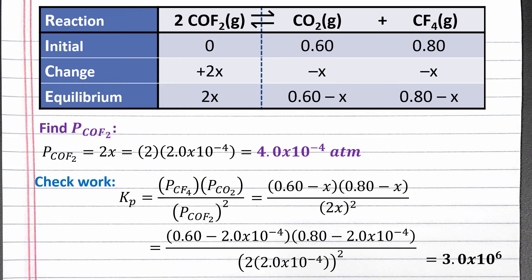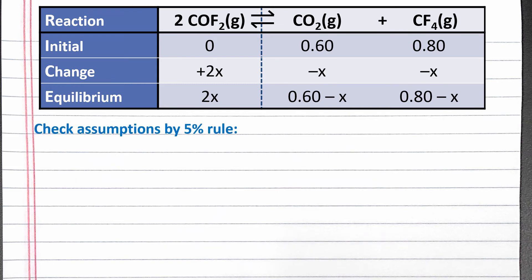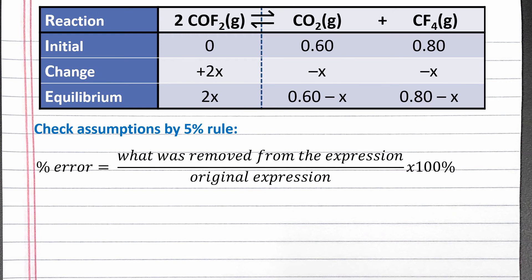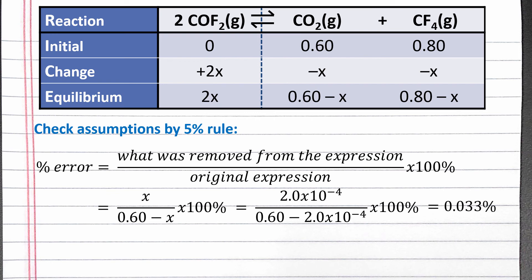We can also check our two assumptions using the 5% rule. According to the 5% rule, if we divide what we removed from the expression by the original expression and multiply by 100%, we should get a number less than 5%. Our assumption was that 0.60 minus x was about equal to 0.60. So we removed x from the expression. This goes in the numerator. Our original expression was 0.60 minus x. This goes in the denominator. If we substitute in the value of x we calculated based on our assumptions, we should get an error of 0.033%. This is far below 5%, so this assumption should be valid.